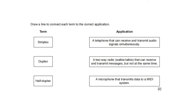Draw a line to connect each term to the correct application. A telephone that can receive and transmit audio signals simultaneously — duplex. A two-way radio or walkie-talkie that can receive and transmit messages but not at the same time — half duplex. A microphone that transmits data to a MIDI system — simplex.